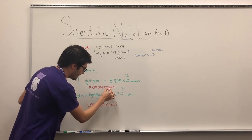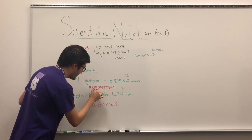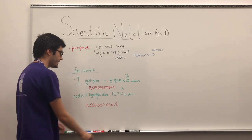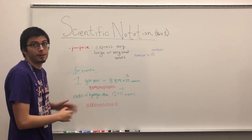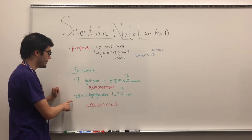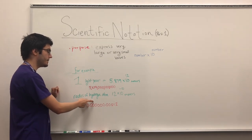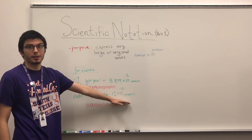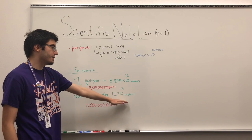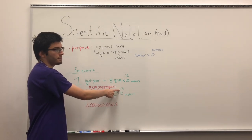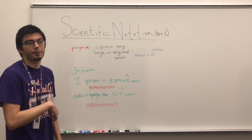So that's an example of something large. For something small, if we're talking about the radius of a hydrogen atom, we're once again using scientific notation. See, it's 10 to a negative 10.